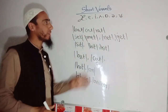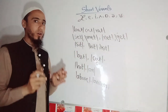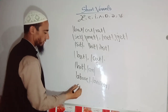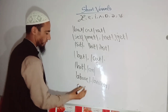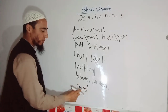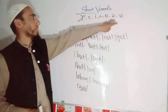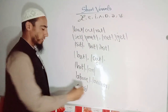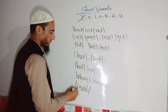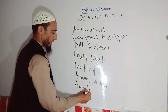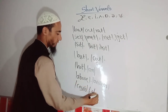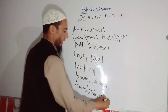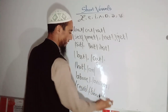We also have the last short vowel symbol — /ʊ/ — for the 'oo' sound, as in 'could'. For these two letters we use this symbol: could, should, and would.